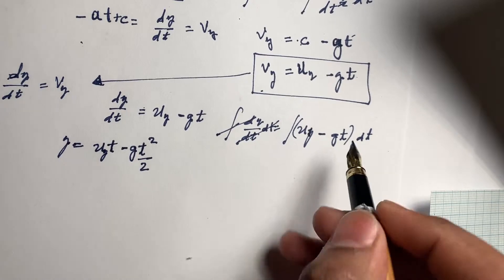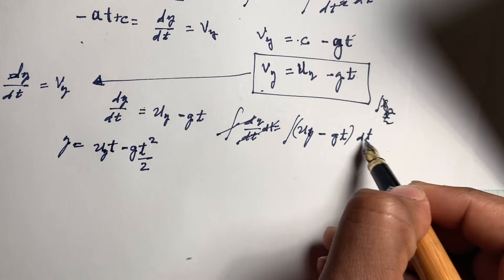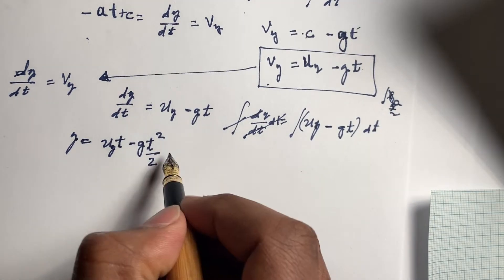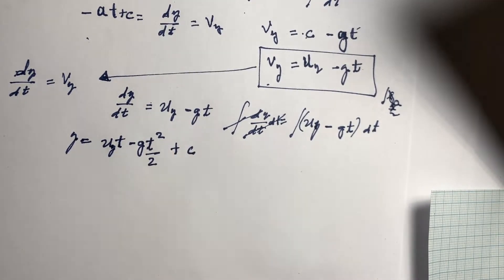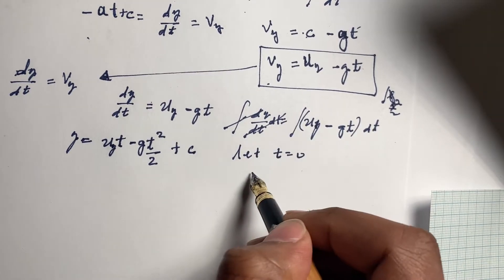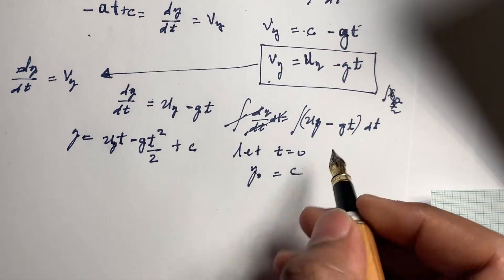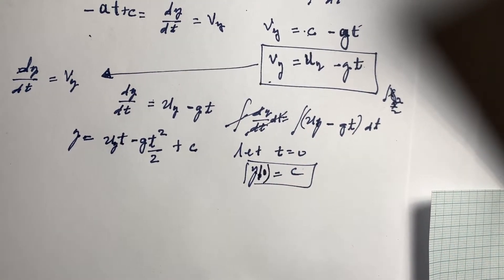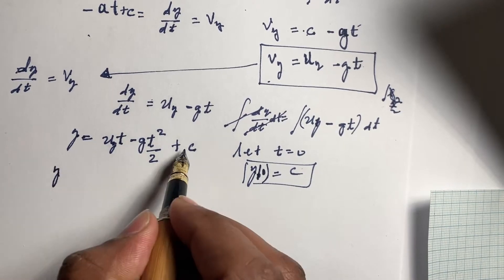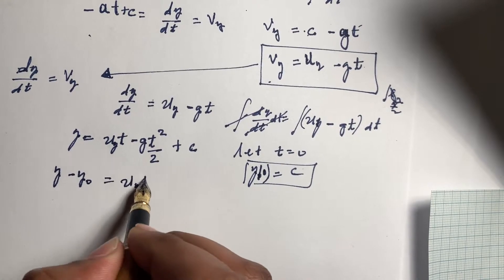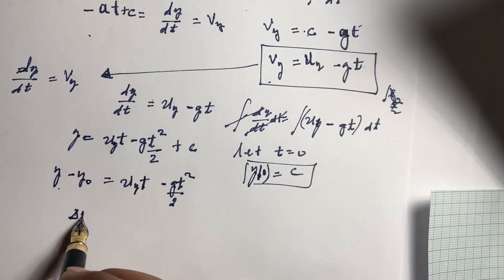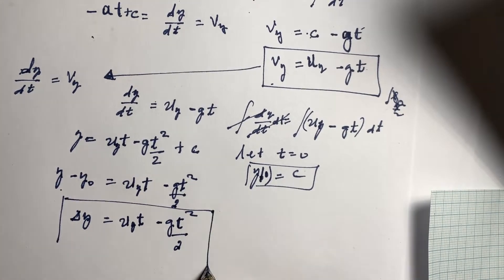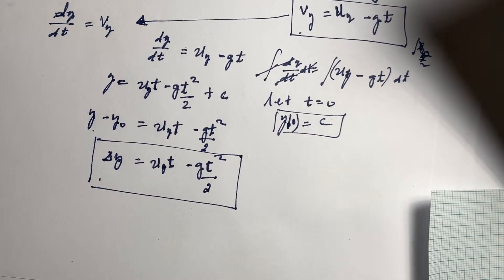Plus a constant from the integration. At time zero, y equals y_not, so the constant is y_not. Therefore y minus y_not, which is delta y, equals u along y times t minus g·t² over 2. This gives us another second kinematic equation — we just derived it.